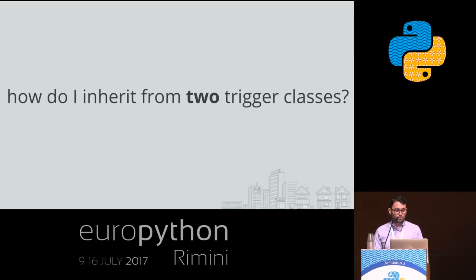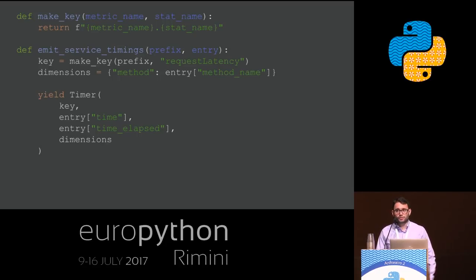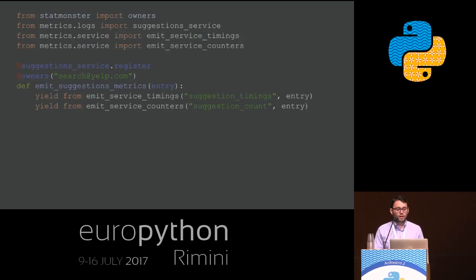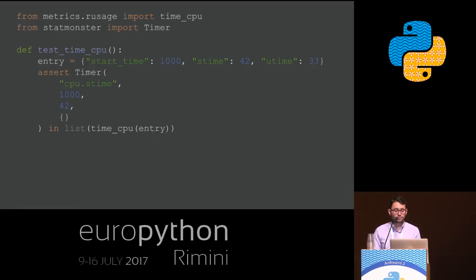How do I inherit from two trigger classes at the same time? This one I'm doubly happy about. You define two functions — the digest method of the first trigger and the exact same code of the second trigger — and you just call them both. You don't even need to ask me. Just call functions. How do I test my trigger class now? Even easier than before — you don't even need PyTest fixtures anymore. It's just a function, you call it.